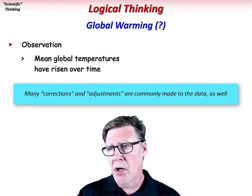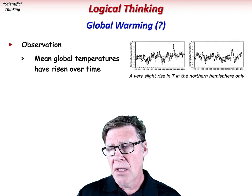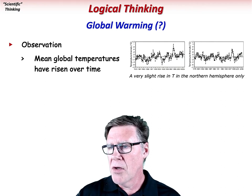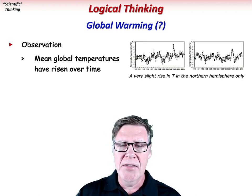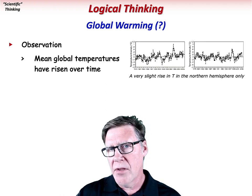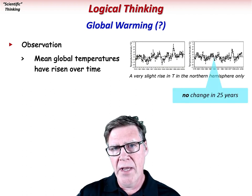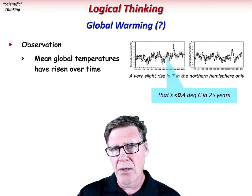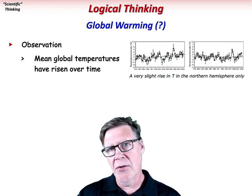The graphs here are satellite data for the northern hemisphere on the left and the southern hemisphere on the right, over a period from the late 1970s until about the year 2000 — a 25-year period. For the southern hemisphere there is no increase in temperature over this time, and for the northern hemisphere there is a small increase of 0.4 degrees centigrade over this 25-year period. But for the sake of argument, let's assume that there is an increase in temperatures over time.